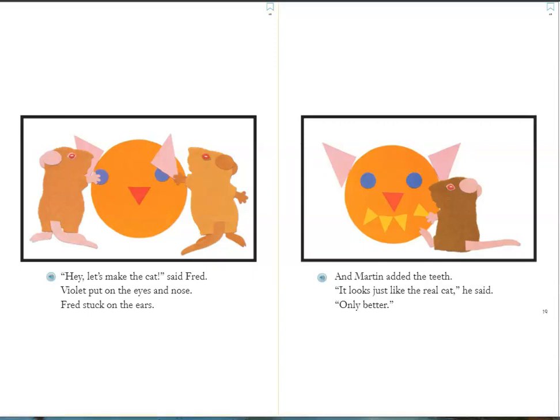Violet put on the eyes and nose. Fred stuck on the ears. And Martin added the teeth. "It looks just like the real cat," he said, "only better."